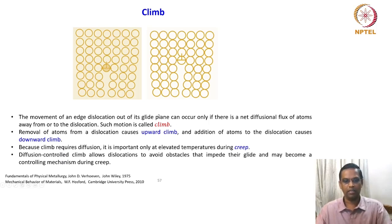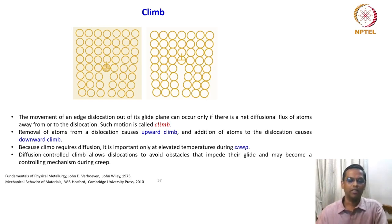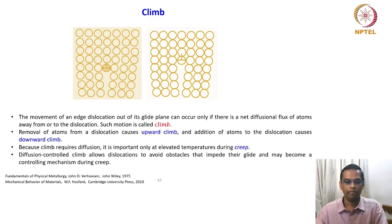Diffusion-controlled climb is also a mechanism of creep at high temperature deformation. We will bring all these aspects when we discuss creep. This is the mechanics aspect of a dislocation, and that is why it is introduced now, though it involves a lot of plastic deformation. All of these dislocation mechanics activities we have seen very suitably illustrate the nature of dislocations.